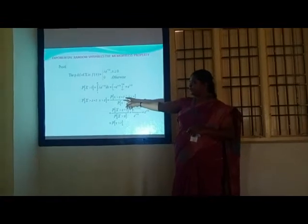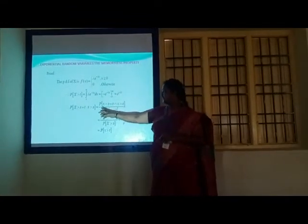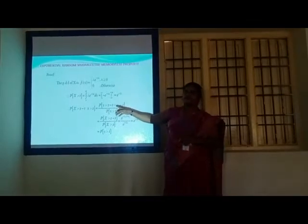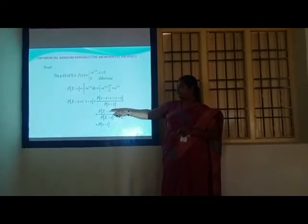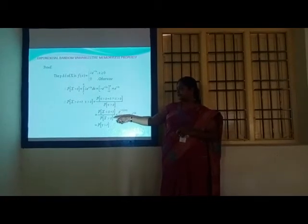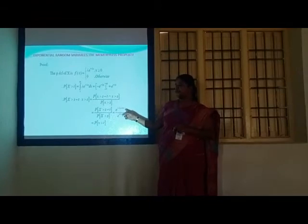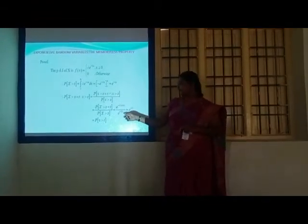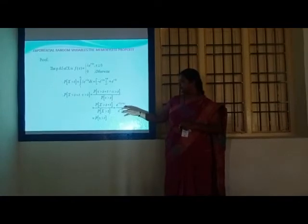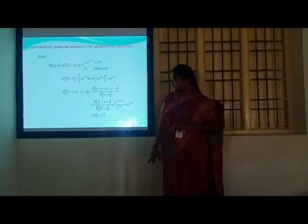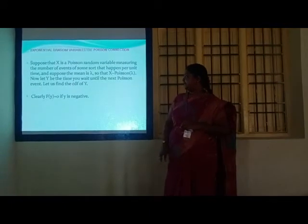Next, P(X > s + t | X > s): by conditional probability, this equals P(X > s + t) divided by P(X > s), which equals e^(−λ(s+t)) divided by e^(−λs). Cancelling e^(−λs) gives e^(−λt), which equals P(X > t).